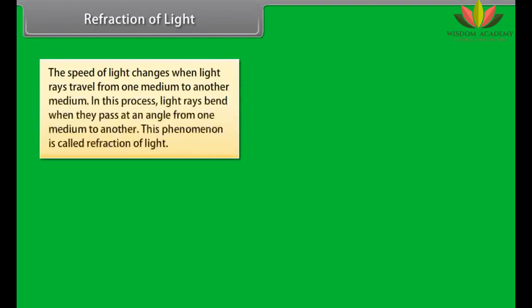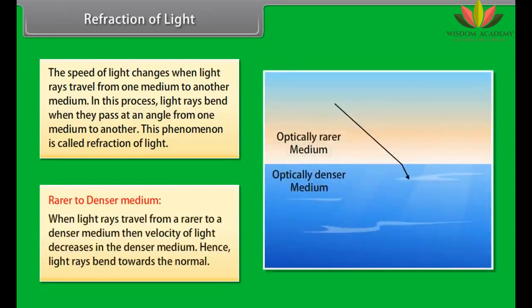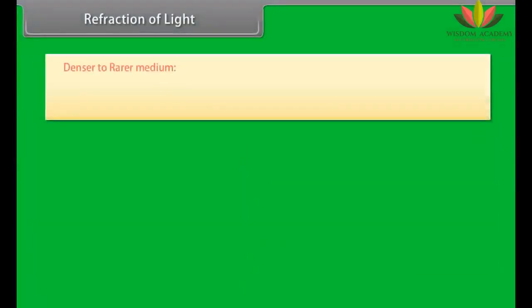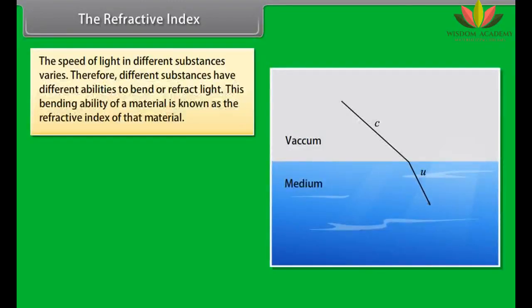Refraction of light: the speed of light changes when light rays travel from one medium to another. In this process, light rays bend when they pass at an angle from one medium to another — this phenomenon is called refraction of light. When light travels from a rarer to a denser medium, the velocity decreases and light bends towards the normal. When light travels from a denser to a rarer medium, the velocity increases and light bends away from the normal.